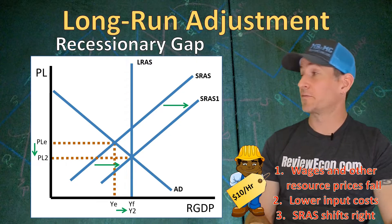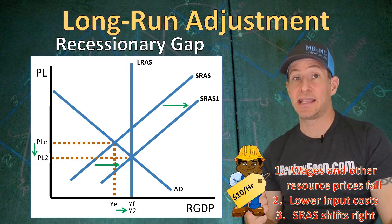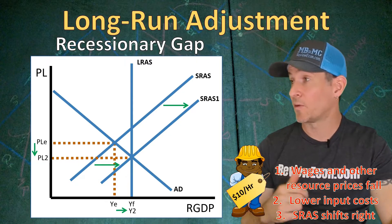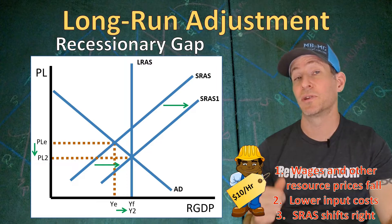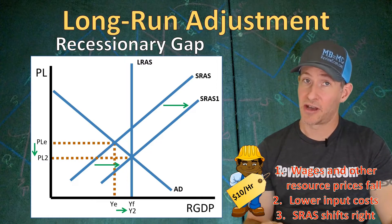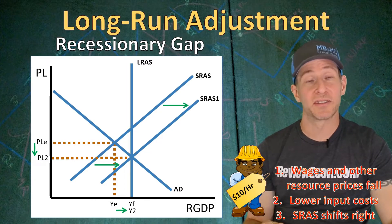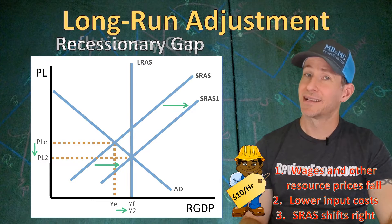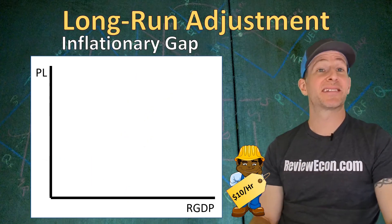So in the short-run we will be at YE, but in the long-run Y2 will equal YF, and the unemployment rate will once again equal the natural rate.